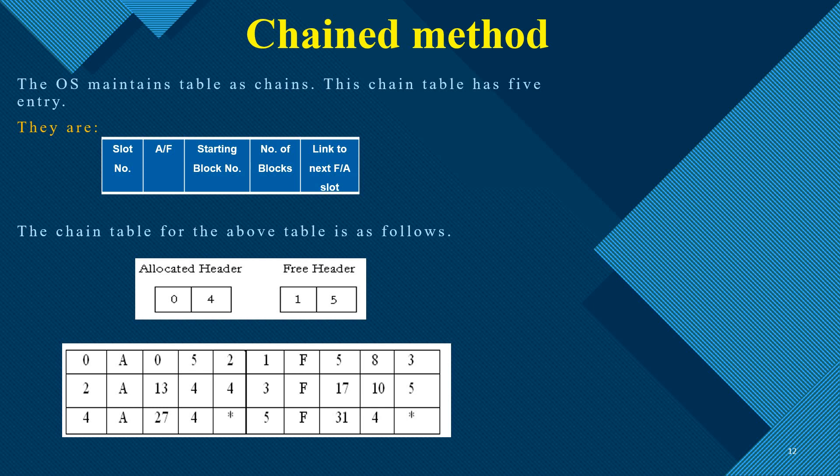The chain method has 5 entries described in a table with: slot number, whether the file is allocated or free, starting block number, number of blocks allocated, and a link to the next file. The table lists what files are allocated and what free allocation lists are maintained in the block allocation list.